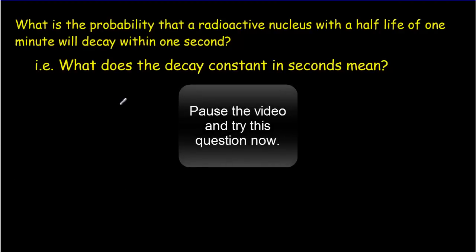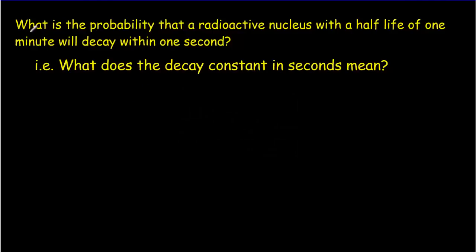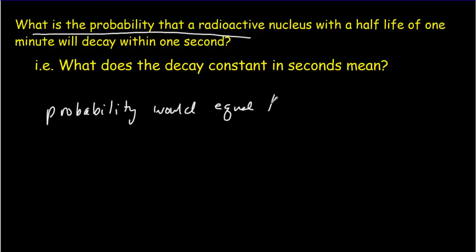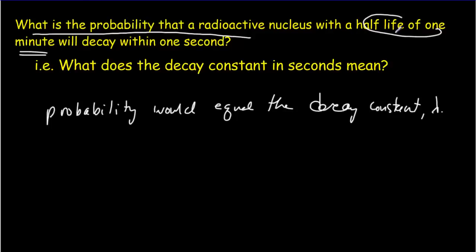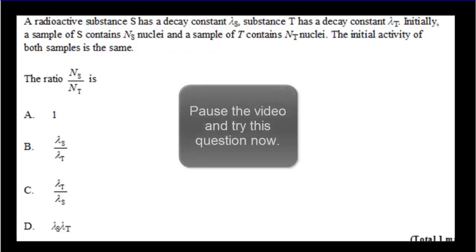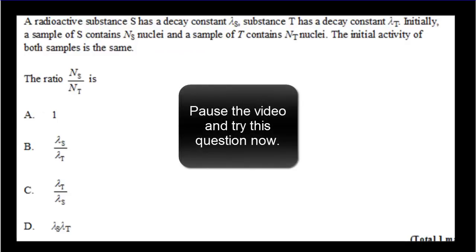What is the probability that a radioactive nucleus with a half-life of one minute will decay within one second? The answer is that the probability equals the decay constant lambda. Notice that if the half-life is one minute, one minute is quite long compared to one second — so we have satisfied the condition that the number of particles will roughly stay constant during that time interval.